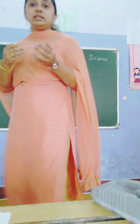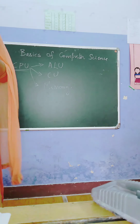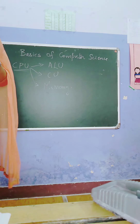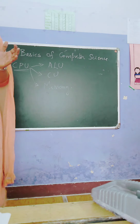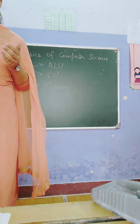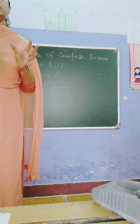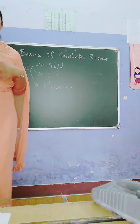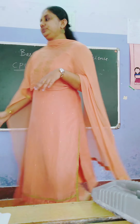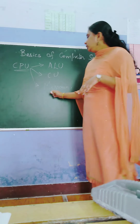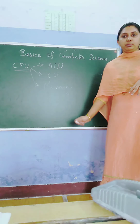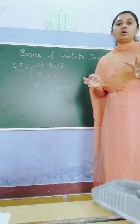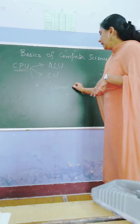The Control Unit's work involves extracting instructions from memory, decoding it, and executing it. The third component is Memory — that is, the main storage space on the computer.